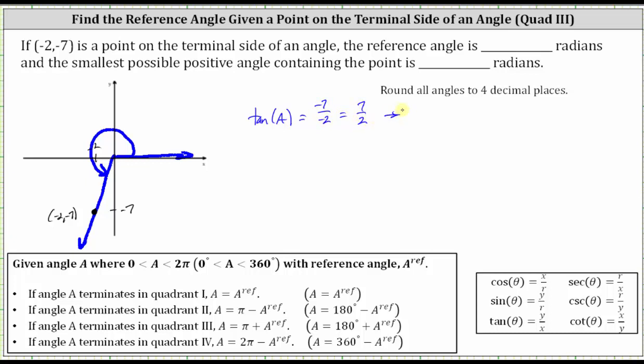And now to solve for angle A, we would take the inverse tangent of both sides of the equation. Simplifying on the left, inverse tangent of tangent A is equal to A, giving us A is equal to inverse tangent of 7 halves.